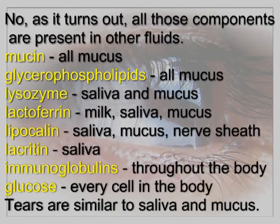No — as it turns out, all those components are present in other fluids. Mucin is present in all mucus membranes. Glycerophospholipids are also in all mucus. Lysozyme is found in saliva and mucus. Lactoferrin is found in milk, saliva, and mucus. Lipocalin is found in saliva, mucus, and even in the nerve sheath. Lacritin is found in saliva. Immunoglobulins are found throughout the body. And glucose is found in every cell in the body.